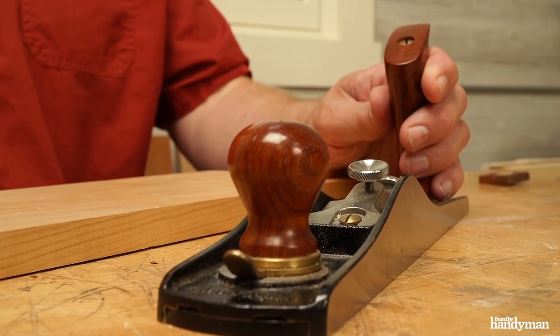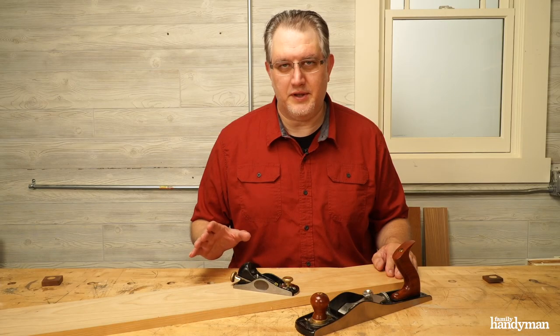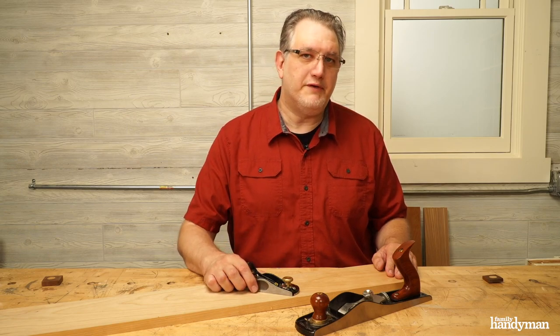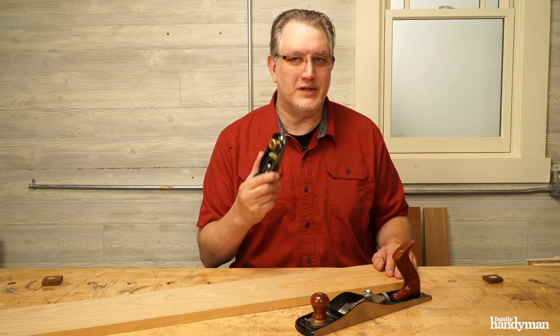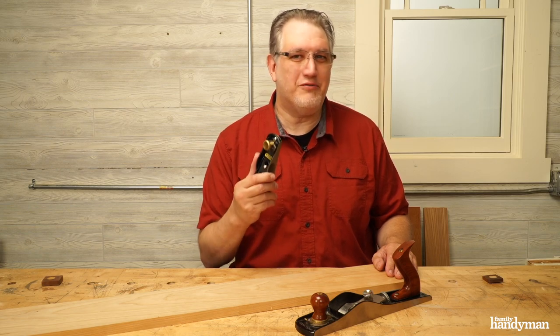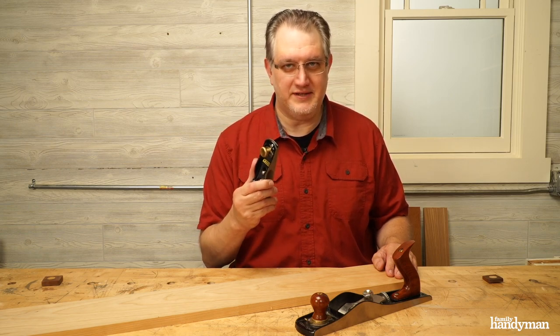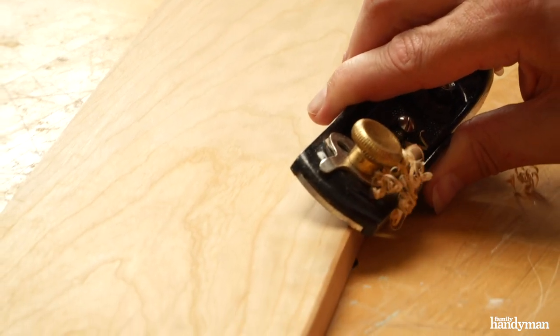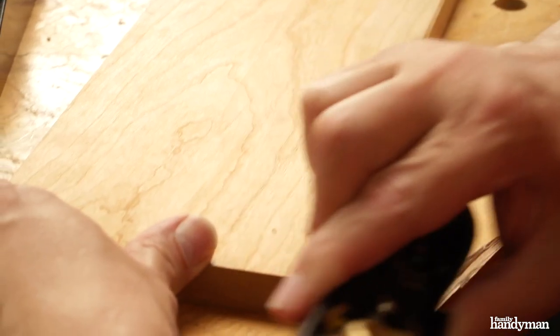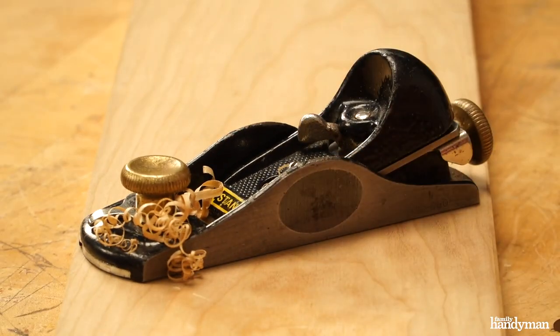When it comes to hand planes, there's probably one for any purpose you can think of, but really if you're only going to have one, it should be the block plane. I believe every carpenter and every homeowner should have one of these. When that door gets sticky in the summertime, a block plane can plane down just a little bit of that edge before you can even get a power tool out of the case.